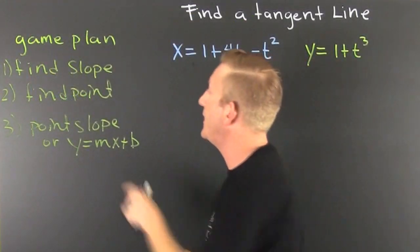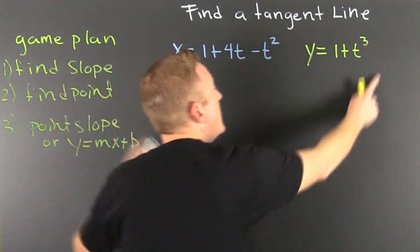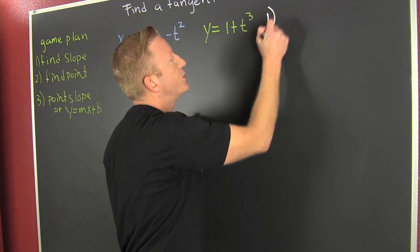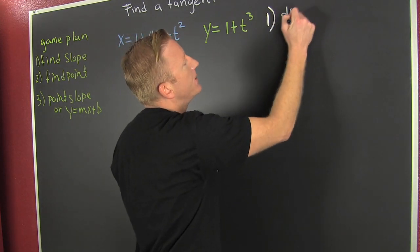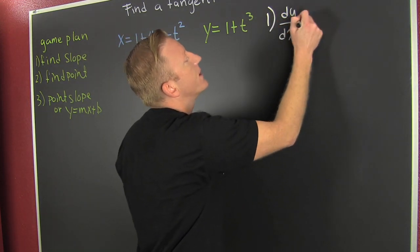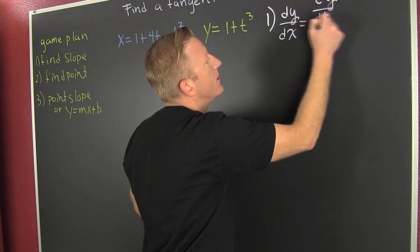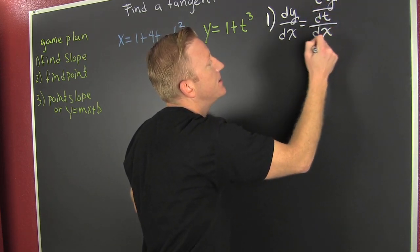We have a game plan. First, we're going to find the slope, and we're going to do that right here. Step one. We need to find dy dx. What's next? That's dy dt divided by dx dt.